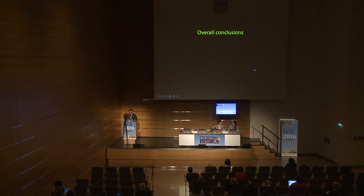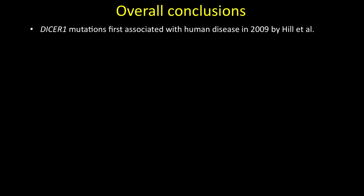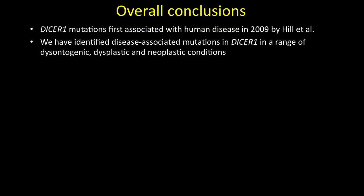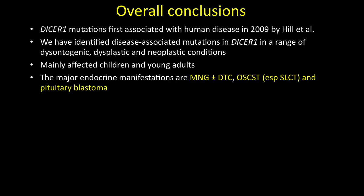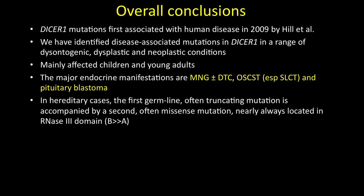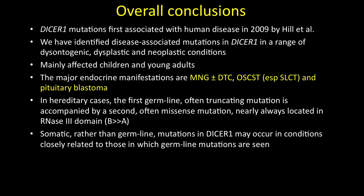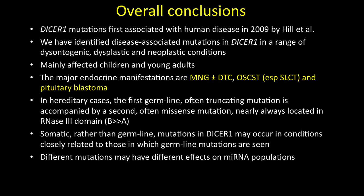To finish: DISA mutations were first associated with disease about 7 years ago, and we have extended this to other conditions — particularly endocrine manifestations affecting children and young adults. The major endocrine manifestations are goiter with or without differentiated thyroid cancer, sex cord stromal tumors particularly Sertoli-Leydig cell tumors, and pituitary blastoma. In hereditary cases, the first germline mutation is often truncating, accompanied by a second usually missense mutation nearly always in the 3B domain. Different mutations may have different effects on microRNA populations, but what this means in terms of disease is not yet fully known.